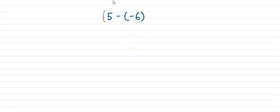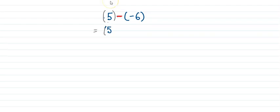Now look at this expression. If we put a bracket around 5, we know that it is a positive number. From positive 5 we are taking away negative 6. This sign represents the subtraction — that is, we are taking away something. So now we will change subtraction to addition.